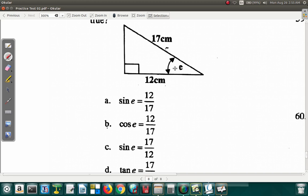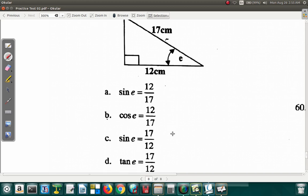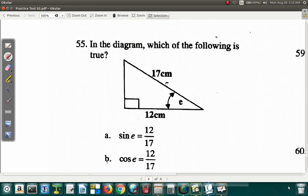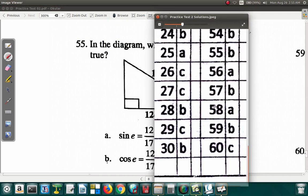Cosine of E is adjacent 12 over 17. This is saying it will be 12 over 17, it seems to be B. Let's see if anything's wrong with C. Sin E is opposite. Again, we're not dealing with an opposite here. Tan E is opposite over adjacent. The opposite we don't know. So this sin and this tan cannot work out. It has to be B. Question 55, B.